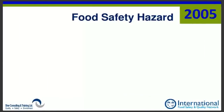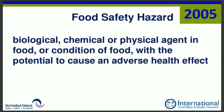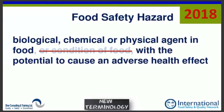In 2005, the food safety hazard was defined as a biological, chemical, or physical agent in food, or condition of food, with the potential to cause an adverse health effect — pretty clear and straightforward. In 2018, the standard has omitted 'or condition of food.' It now reads: a biological, chemical, or physical agent in food with the potential to cause an adverse health effect. This is one of the changes I do not like.